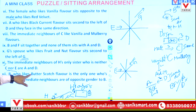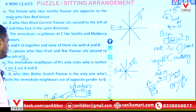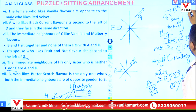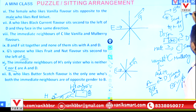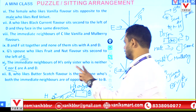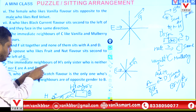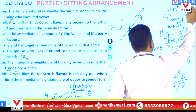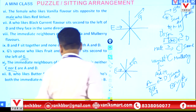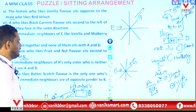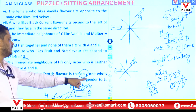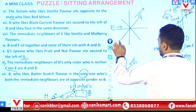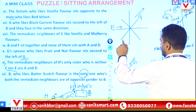Condition 12: B, who likes butterscotch flavor, is the only one whose both immediate neighbors are of opposite gender to B. If B is plus (one gender), both neighbors are minus (opposite gender). Conversely if B is minus, both neighbors are plus. This is about gender, not direction — the reverse is also satisfied.